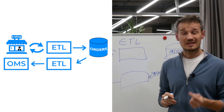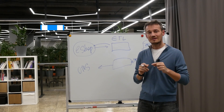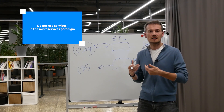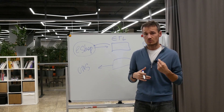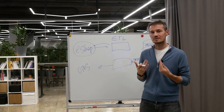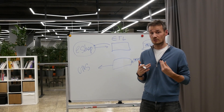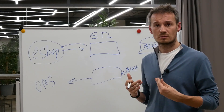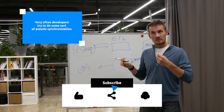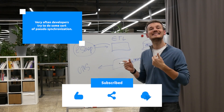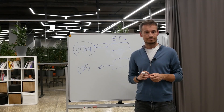So, I encourage you to be very careful when using this mechanism. Do not use services in the microservices paradigm to deliver their own messages. A microservice can communicate and be event-driven — what it usually needs to tell other systems is the output of its process. Communication between services should be asynchronous, both technically and in reality, because very often developers try to do some sort of pseudo-synchronization. A message is sent to a message broker, but we still hope it will be processed very quickly. That's not a fail-safe system. Goodbye!